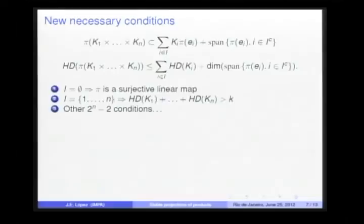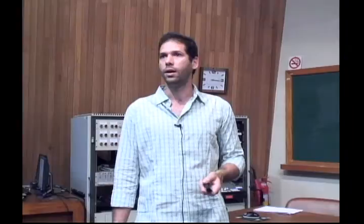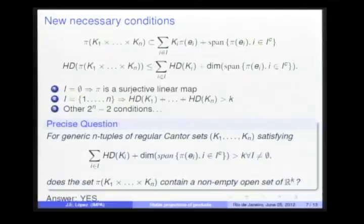Then, a natural question could be: are those 2ⁿ conditions sufficient in order to give a positive answer? More precisely, for generic n-tuples of regular Cantor sets satisfying these 2ⁿ conditions, does the projection of the Cartesian product contain a non-empty open set? The answer is yes.